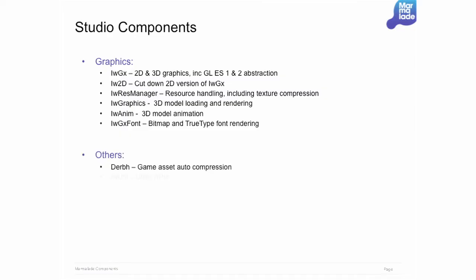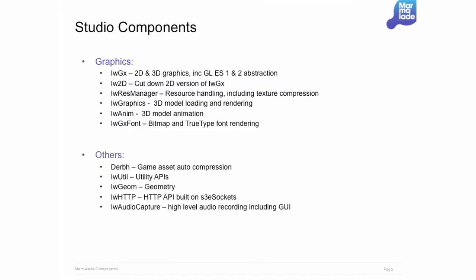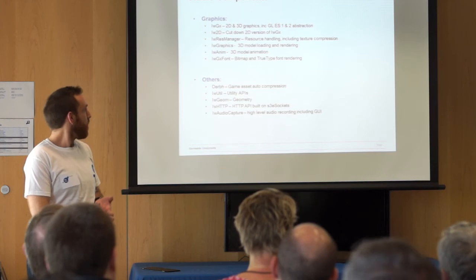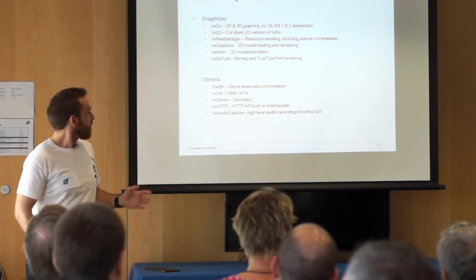A quick bit about the Studio components — these have been there for quite a while. We have some graphics library stuff: GX is a rendering layer that does GLES 1 and 2 and some software rendering abstraction. On top of that are things for resource management, automatic texture compression to cope with different GPUs, 3D model rendering, and tools on PC for plugging that into 3ds Max and Maya, plus some utility APIs.